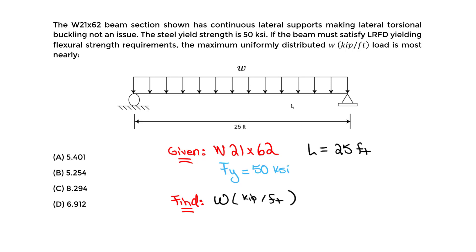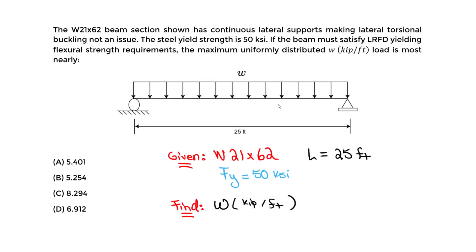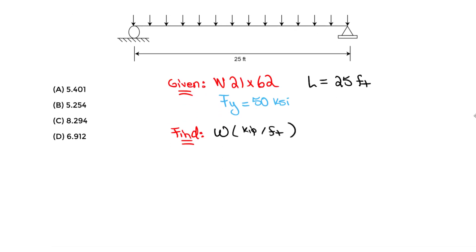We are essentially finding the omega that will sustain this beam and not cause it to fail, based on the yielding criteria, because we are not concerned with lateral torsional buckling. Typically we look at yielding, lateral torsional buckling, or designing for shear. In this case, we will focus on yielding for this specific beam.